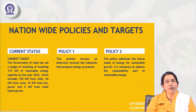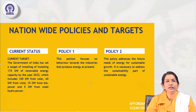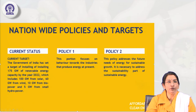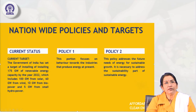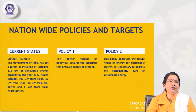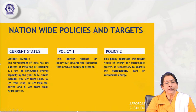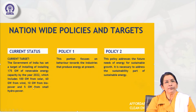Regarding nationwide policies and targets, the Government of India has set a target of installing 175 gigawatts of renewable energy capacity by 2022. This includes 100 gigawatts from solar, 60 gigawatts from wind, 10 from bio power, and 5 from small hydro power. These are the current status and targets for achieving 175 gigawatts of renewable energy from diverse sources.